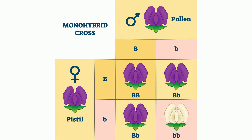The alleles can be either dominant or recessive. The dominant allele is represented by a capital letter. A dominant allele will cover up or mask a recessive allele. You must inherit two recessive alleles, represented by a lowercase letter, to express a recessive trait.